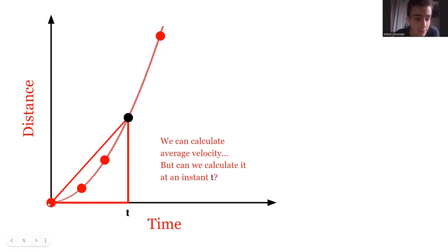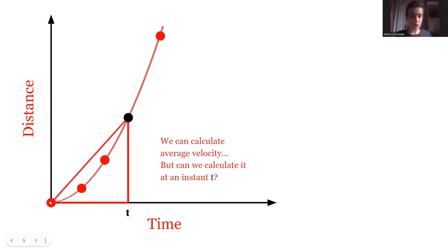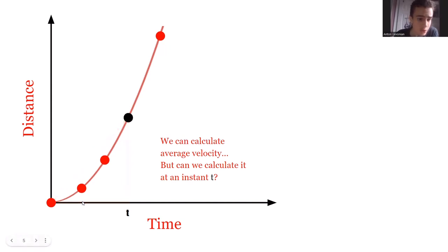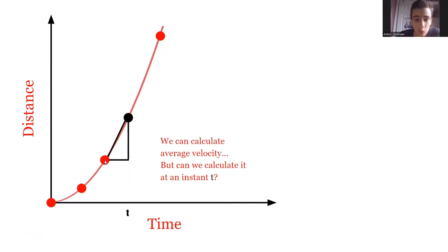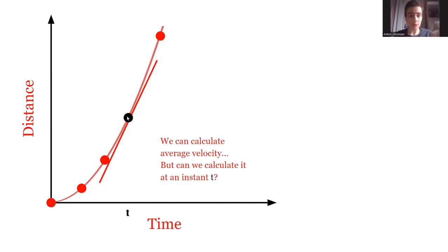Average velocity is just distance divided by time — graphically on this graph it's the slope of the line between two points. But average velocity isn't exactly accurate, because here the object is moving much slower at first. As we consider the average velocity between points that are closer and closer together, we can think of the instantaneous velocity as the slope of the line that is tangent to the graph at that point.